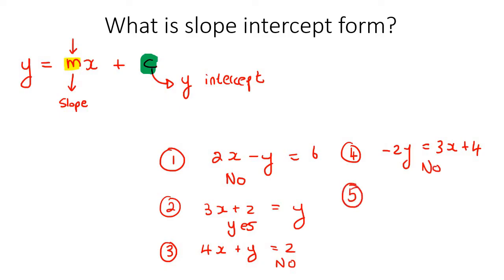And then lastly, number 5. Here we have, at number 5, we've got the y completely by itself. So for this one, we would say yes, that is slope-intercept form.